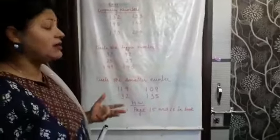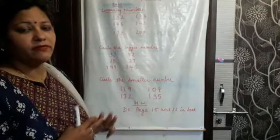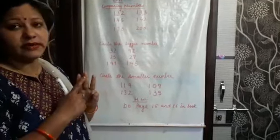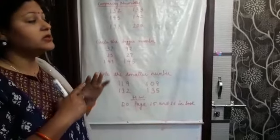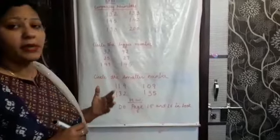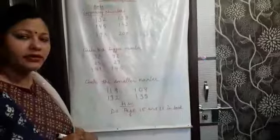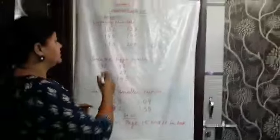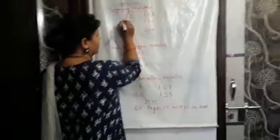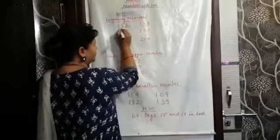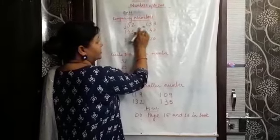You have learned three members of the family: ones, tens, and hundreds. So when we compare the numbers, we start from the hundreds place. We will compare the numbers which are at the hundreds place.